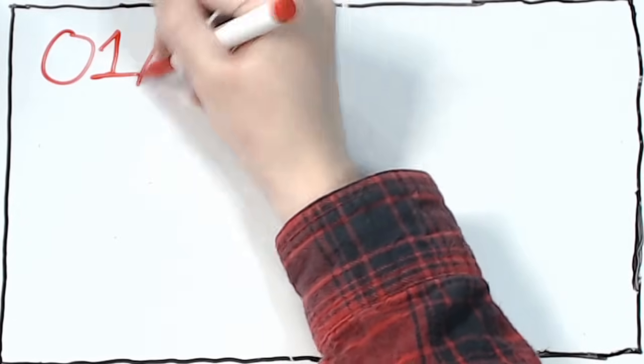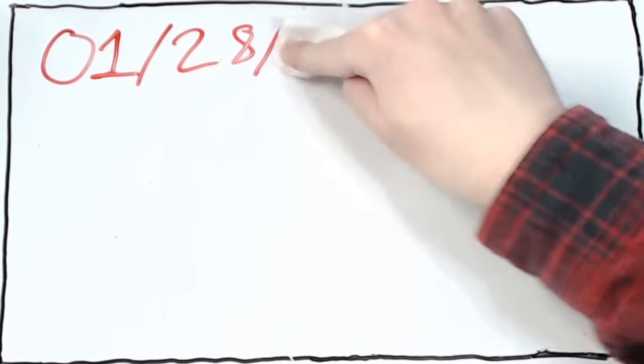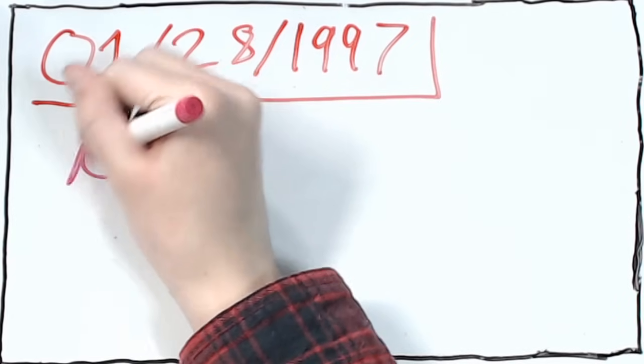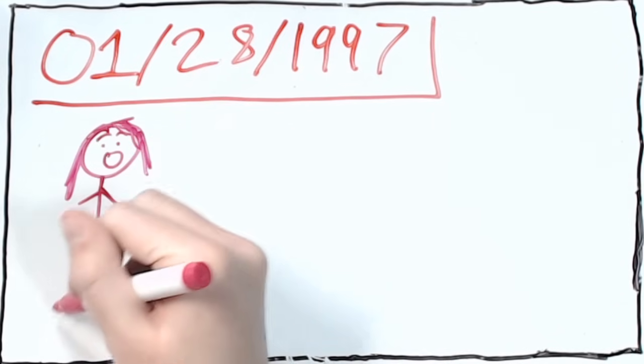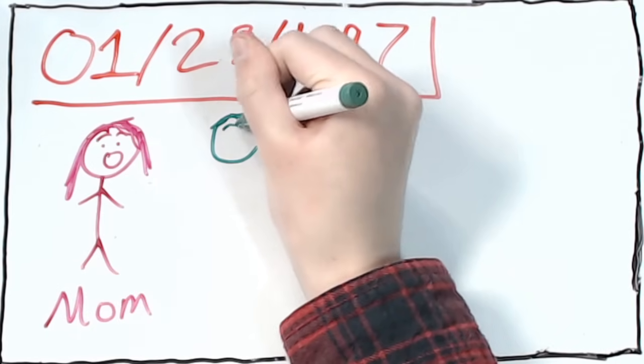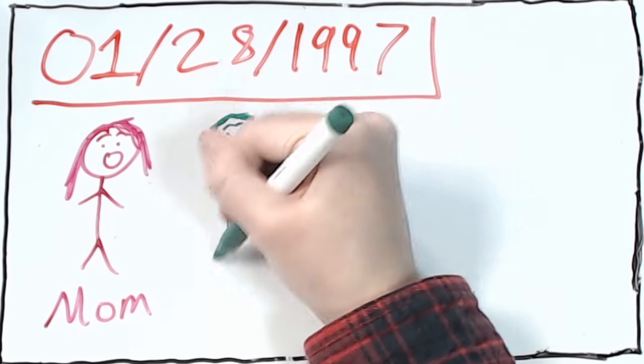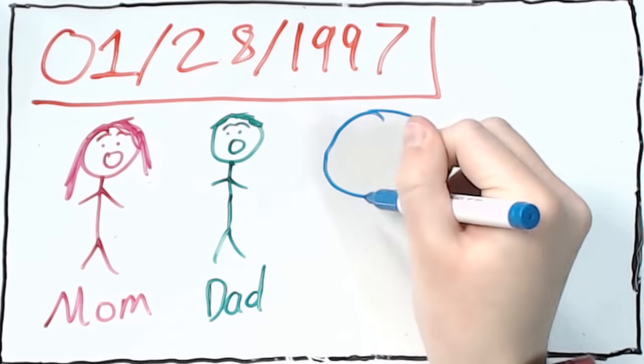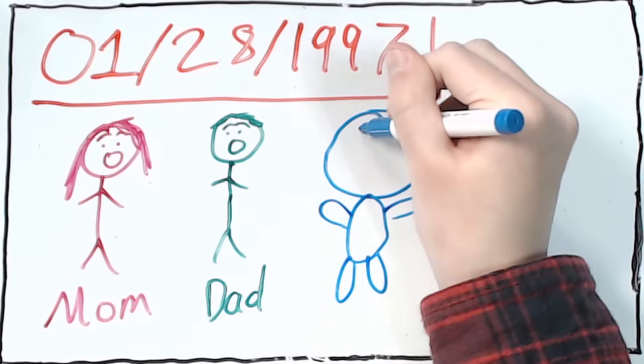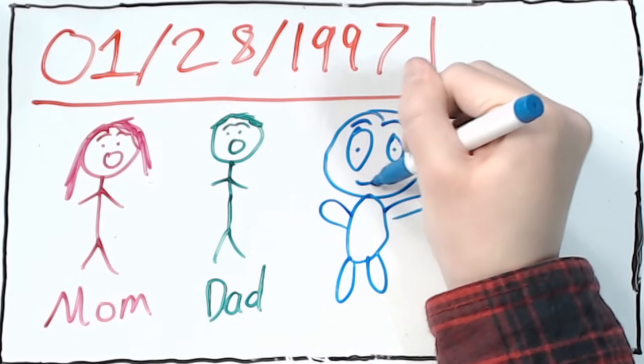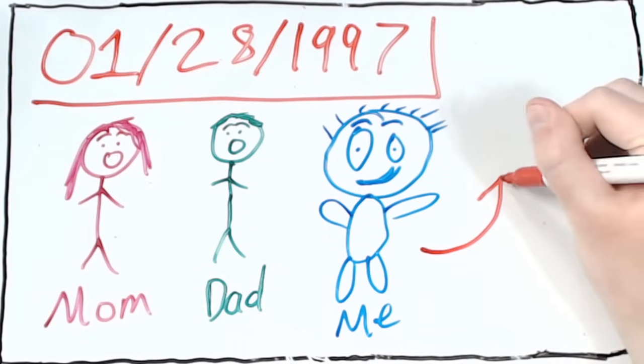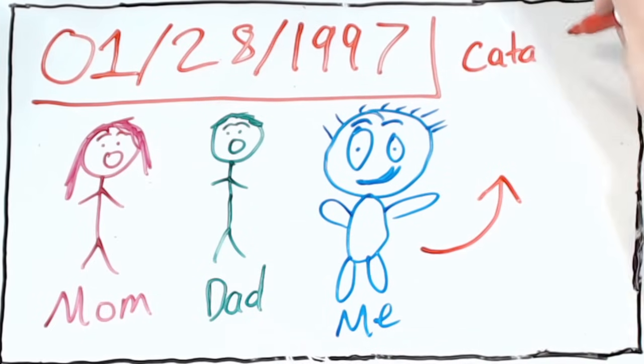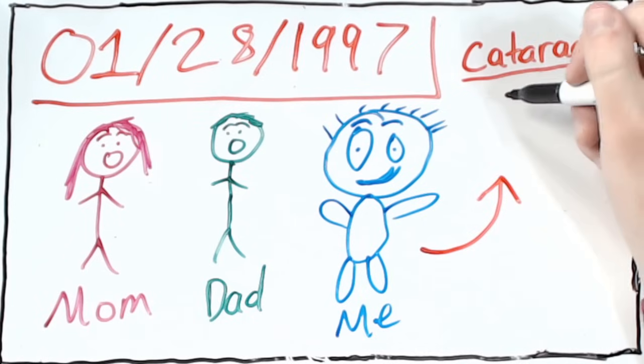My story starts out on January 28th, 1997, where I was born in Jacksonville, Florida to my mom and my dad. I was a baby, nothing too crazy. I wasn't super heavy or super tiny, just a normal baby, or so my mom and dad thought. It turned out that I was born with something called a cataract in my left eye. For the people who don't know what a cataract is, it's basically a condition where the lens in your eye becomes cloudy and you can't see.